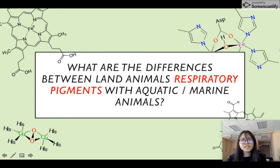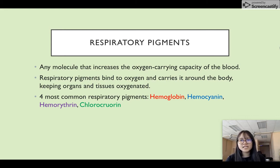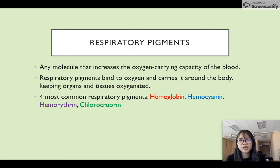The second question is: what are the differences between land animals' respiratory pigments and aquatic marine animals'? There are a few respiratory pigments. A respiratory pigment is any molecule that increases the oxygen-carrying capacity of the blood. Respiratory pigments bind to oxygen and carry it around the body, keeping organs and tissues oxygenated.